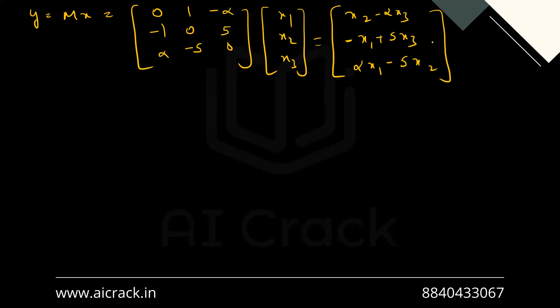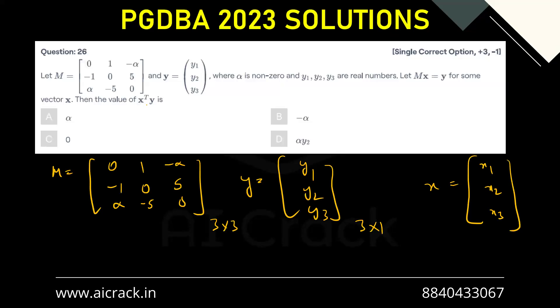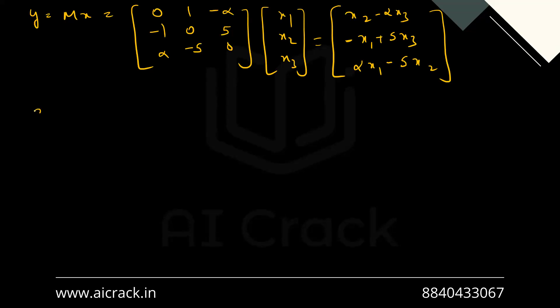Now what they have done is they have multiplied X transpose into Y. So X transpose would be [x1, x2, x3]. Now we have to multiply X transpose with Y, right?